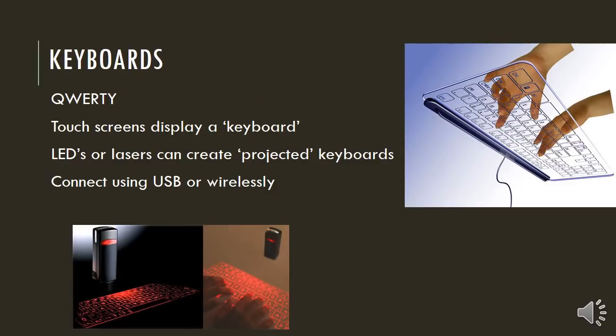Keyboards. Our keyboards are called QWERTY because of the first line of letters which starts with QWERTY. You can get touch screens which display a keyboard — on your cell phone you will have this. You can also get LEDs or lasers which create a projected keyboard, so it looks as if there's a keyboard on your desk but it's being projected by a device, and then you type on the desk and the device can read what you're typing.